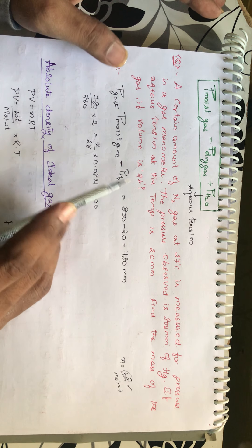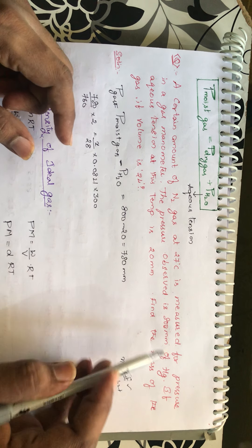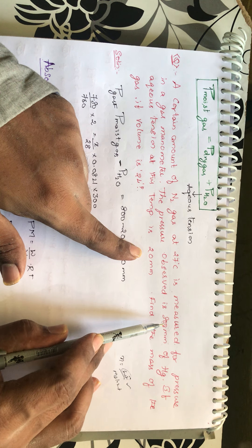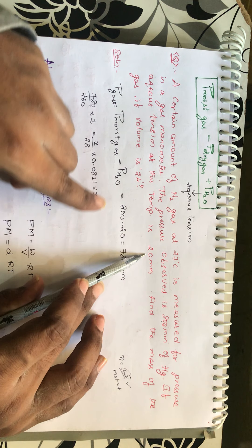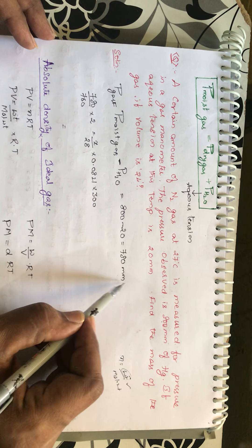Pressure of the gas will be pressure whatever that has been exerted by the moist gas minus H2O. What is the total pressure here? 800. So 20 is exerted by the water. If you remove from 800 to 20, you will be getting the pressure exerted by the dry gas. So pressure is 780 mm.